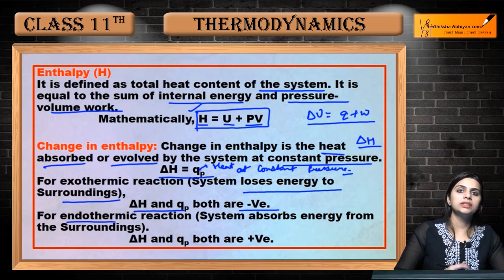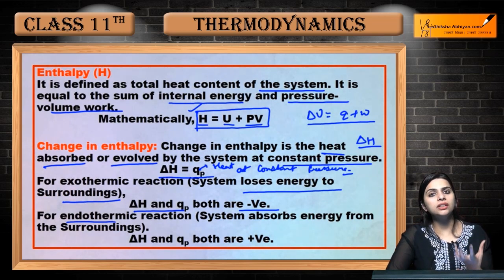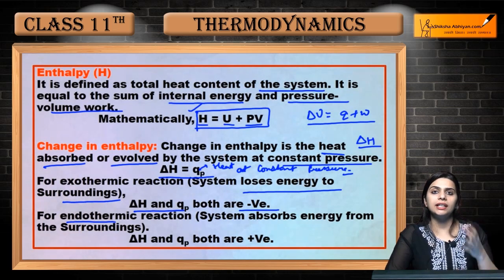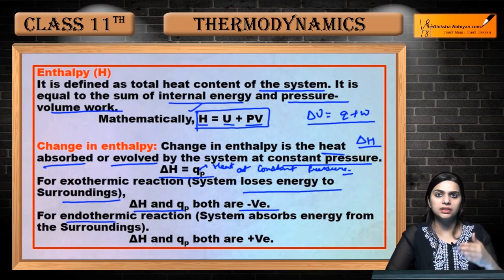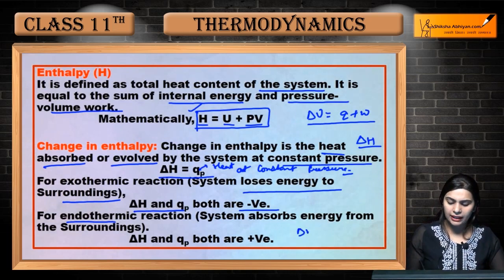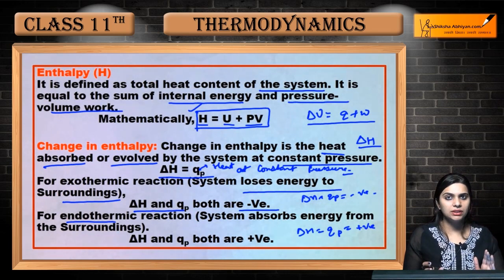Aur agar hum endothermic processes ki baat karein — endothermic process mein hum heat provide karte hain system ko, that means when the system absorbs energy from the surroundings. Koi bhi experiment karne ke liye ya koi bhi change lane ke liye jab aapne heat externally provide kiya apne system ko — that is endothermic reaction. Us mein ΔH aur qp ki value positive hogi.